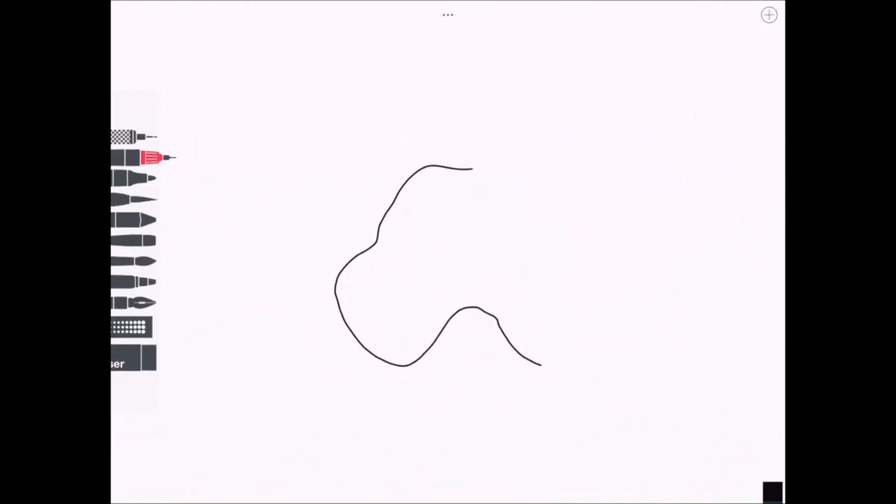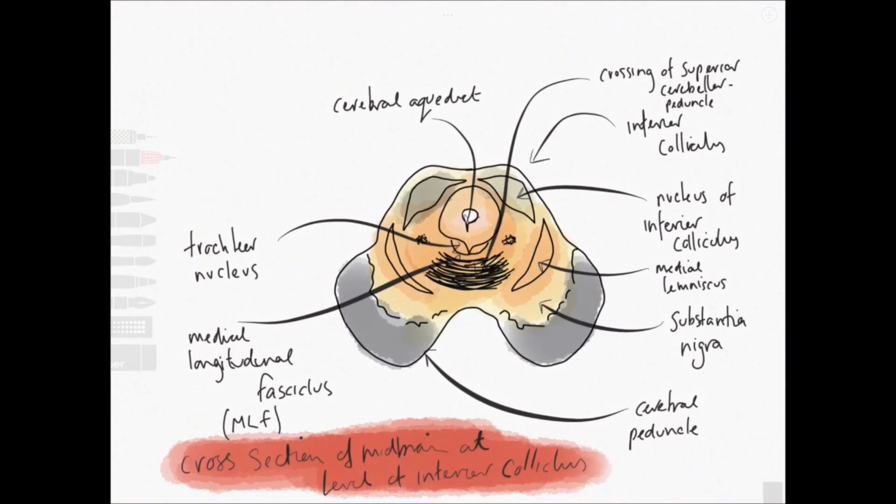So let's take a look at the inferior colliculus and the cross-section at that level. So coming on now is a very similar drawing to what we saw before. And we can draw on some of the same structures. In the centre there, we have the cerebral aqueduct again. And that is, of course, we're still surrounded by the periaqueductal grey. But you'll notice already that it's looking slightly different. So first of all, we want to take a look at something that we didn't label last time, but is there.